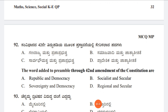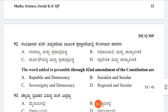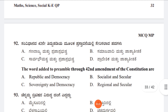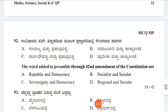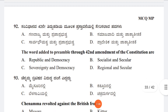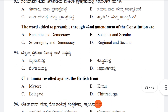Question 92: The words added to the Preamble through the 42nd Amendment of the Constitution are Option A: Republican and Democracy, Option B: Socialist and Secular, Option C: Sovereignty and Democracy, Option D: Regional and Secular. The answer is Option B, Socialist and Secular — those two words were added by the 42nd Amendment.